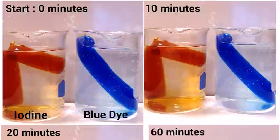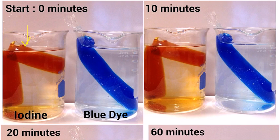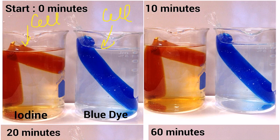So to show this, I've set up two beakers, and in each beaker we have what are called cells. The cells are just pieces of dialysis tubing that have been tied off and filled up with chemical color indicators. In the cell on the left, we have a chemical indicator called iodine, and in the cell on the right, we have blue dye.